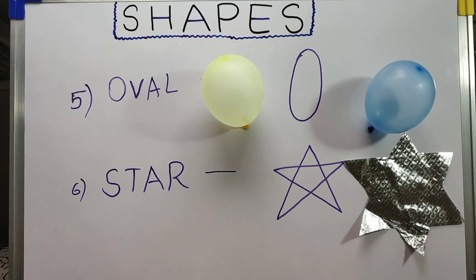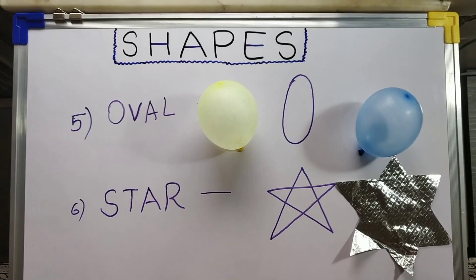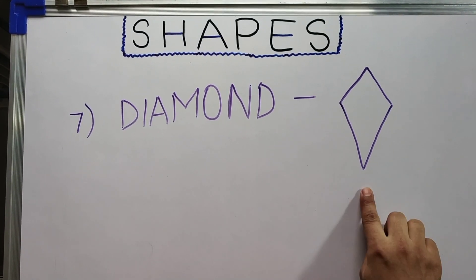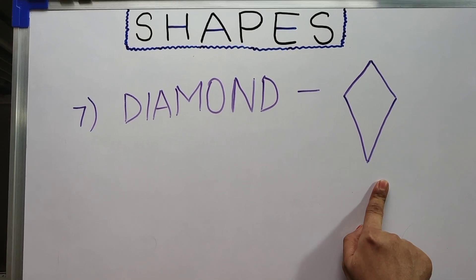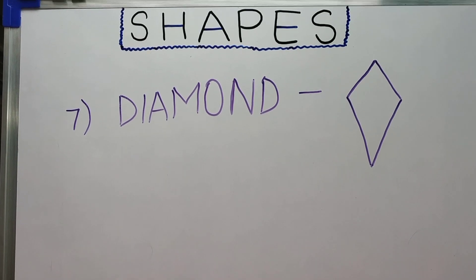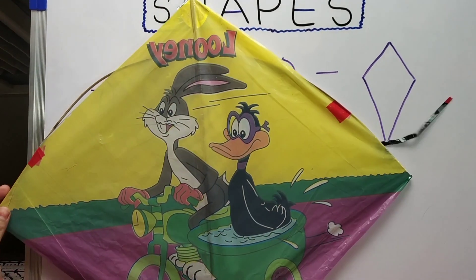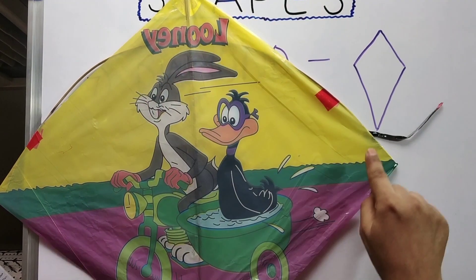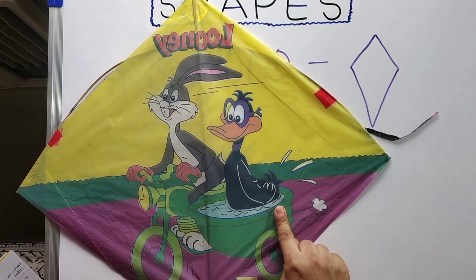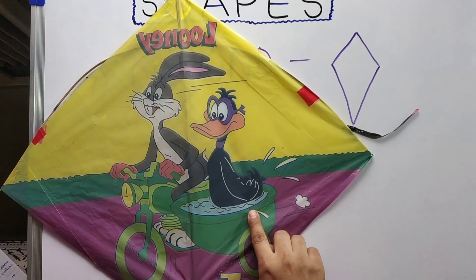Then you can introduce them to the diamond shape. First make your child familiar with the diamond shape, and then relate it with an object. For that, you can show them a kite which is in the shape of a diamond. This will be easier for a child to relate the shape to an object.